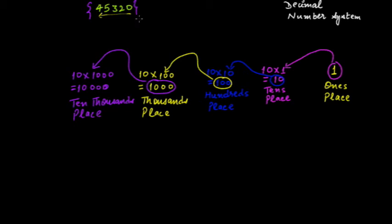In this example, if I assign each digit to its place: zero will come at the units place, two will come at the tens place, three will come at the hundreds place, five will come at the thousands place, and four will come at the ten thousands place. So each digit — zero, two, three, five, and four — has been placed at its respective place.